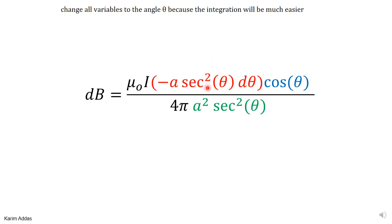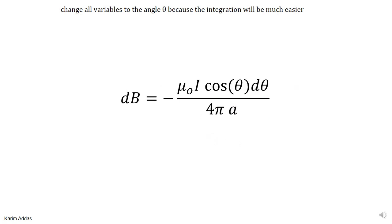Substituting everything in, the sec²θ terms cancel with each other, and one factor of a cancels as well. This gives us the final expression for the magnetic field magnitude dB due to an element of current located at angle θ. This is not the total magnetic field yet — it's only the contribution from a single element.